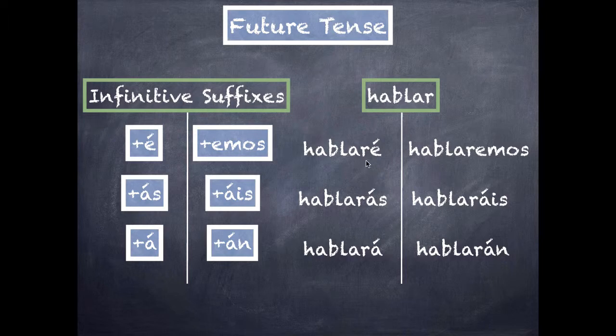Another thing that you've probably noticed is that these endings are actually the verb haber. So remember the present perfect tense that we learned about, where it was he comido, has comido, ha comido. Those ones all use the same endings except for vosotros, which is a little bit shorter. It's just áis instead of habéis.